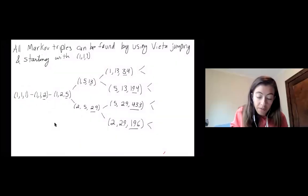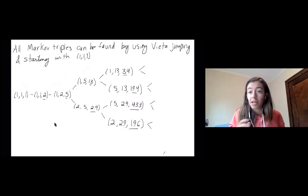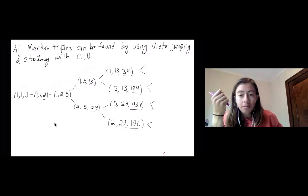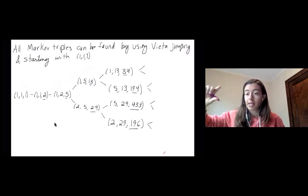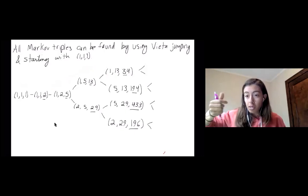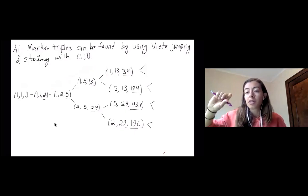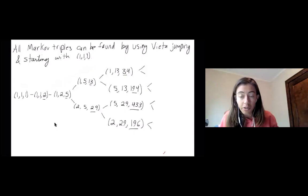And you can actually show that all Markov triples can be found in this tree. So using Vata jumping, starting with 111. One way to show this is given a Markov triple, take your biggest element and use this Vata jumping, or I think it's called root flipping, and you'll get something smaller. So you can induct on the sum of all the elements of your Markov triples. That's an easy way to show this.